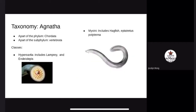Taxonomy. Agnatha are a part of the phylum Chordata and the subphylum Vertebrata. Two of the classes are Hyperoardia and Myxinae. Hyperoardia include the lamprey and Endiolepis, which is an extinct group, and Myxinae include hagfish and Eptatretus, Polytrema, an extinct group.